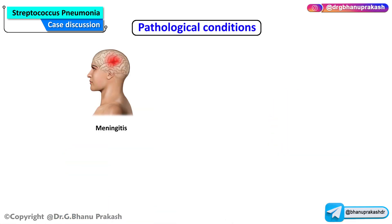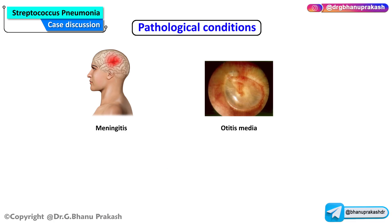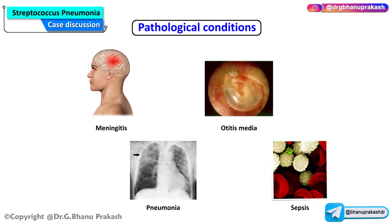Can you please tell me regarding Streptococcus pneumoniae, what are the most important pathological conditions that are associated with this? There are four conditions associated with this organism. The first one is meningitis, the second one is otitis media which is the most important condition, the third one is pneumonia, and the fourth one is sepsis.